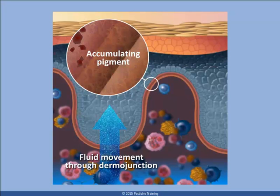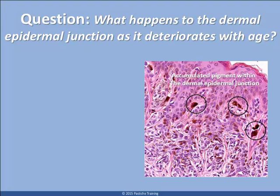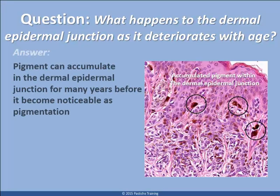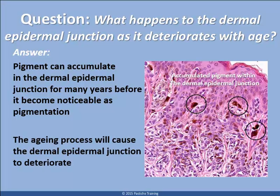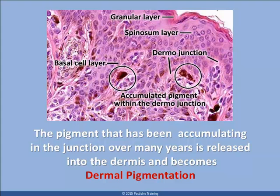If this is an ongoing problem, then large amounts of pigment could accumulate into this junction. The next two slides are histology slides of pigmented skin — it takes practice to read histology slides. Pigment can accumulate in the dermal-epidermal junction for many years before it becomes noticeable as pigmentation. The aged skin will lose the strength and integrity of the junction, resulting in looseness and separation of the epidermis from the dermis. All of the accumulated pigment that was in the junction will be released into the dermis as a result of the dermal-epidermal junction collapse. This is called dermal pigmentation.